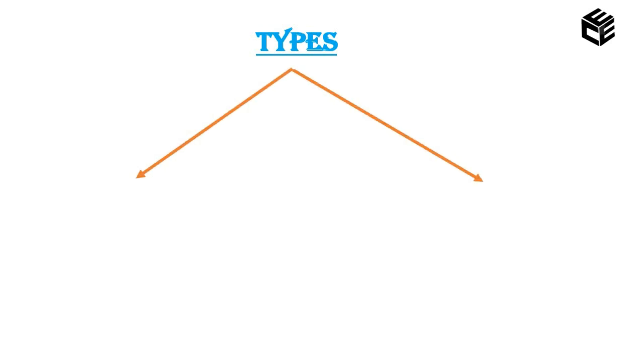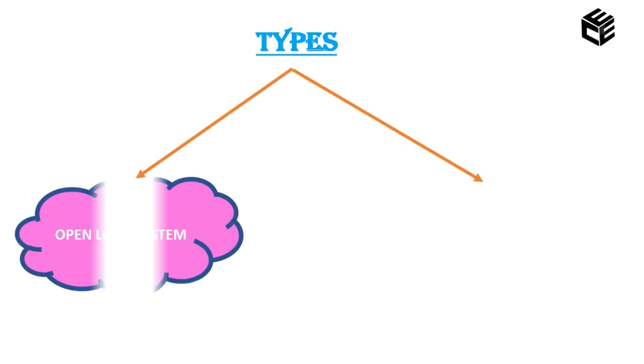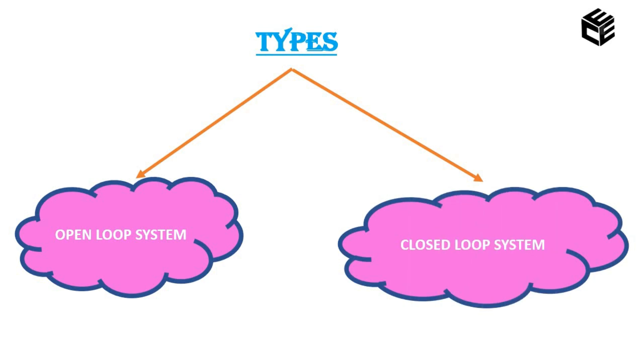What are the types of control systems? Control systems can be broadly classified into two types: one is called an open loop control system and the other one is called a closed loop system. Let us see what is an open loop system and what is a closed loop system.